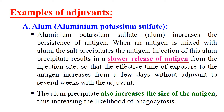Secondly, alum also increases the size of the antigen. Once the size of the antigen gets increased, phagocytic cells will more easily phagocytose the antigen. Because the size of that weak antigen got increased due to the adjuvant, it will be more rapidly phagocytosed — ultimately the immunogenicity of that weak antigen is enhanced due to this adjuvant.